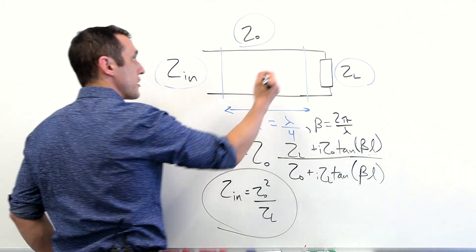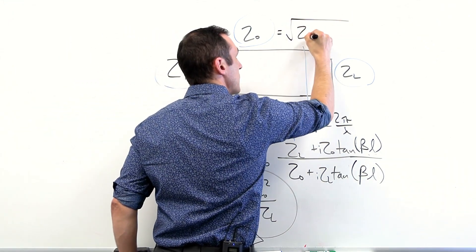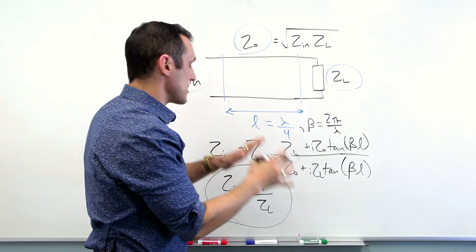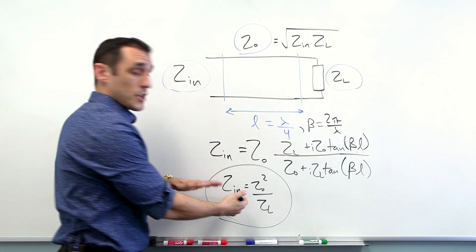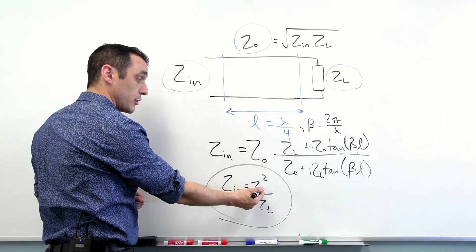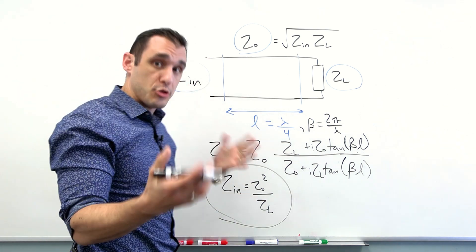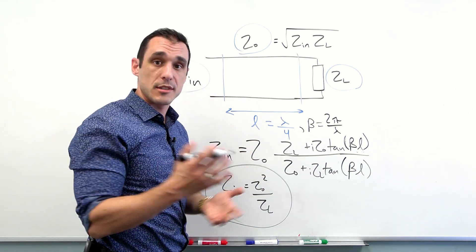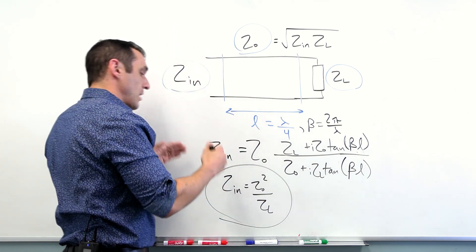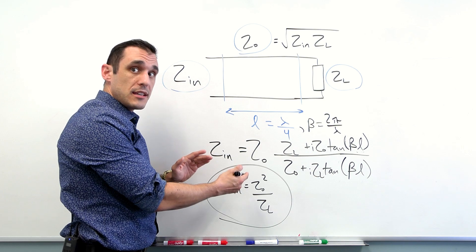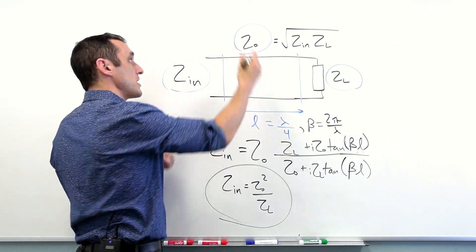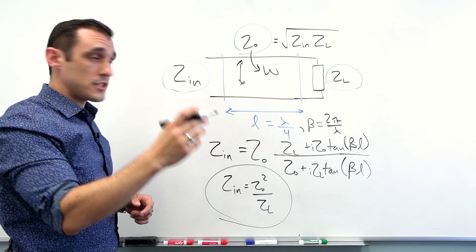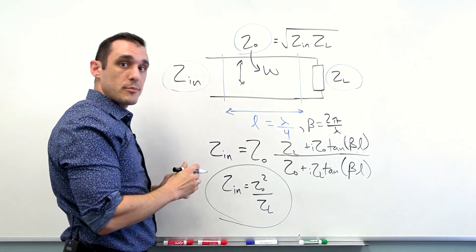From here, you just solve for Z sub 0. You actually find that it is the square root of Zn times Zl. This should illustrate the reasoning for ignoring the losses because the reason you would want to ignore the losses here in this equation is, first of all, it just simplifies the calculation and it gives you a purely real number for the characteristic impedance. And you can actually design the characteristic impedance to some target value using your PCB design tools like Altium Designer. Other PCB design calculators will actually give you only a real impedance.